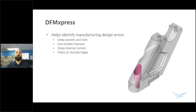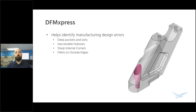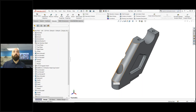The first tool is Design for Manufacturing Express, created by CAMWORKS, the company that wrote SOLIDWORKS CAM. This tool identifies manufacturing design errors within your parts — errors that can make it expensive, costly, or even impossible to machine or build. It can identify deep pockets or slots, inaccessible features, sharp corners, or filleted edges on the outside. DFM Express is a free tool available in every license of SOLIDWORKS. I use it extensively whenever I take a prototype part and want to get it manufactured or built, whether that's 3D printing or machining.